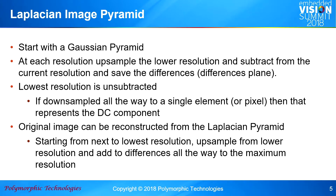The Laplacian version starts with a Gaussian pyramid, but what it does is add difference planes to it. So basically, as you generate a Gaussian, starting from the bottom up you upsample, and then subtract from the corresponding resolution.